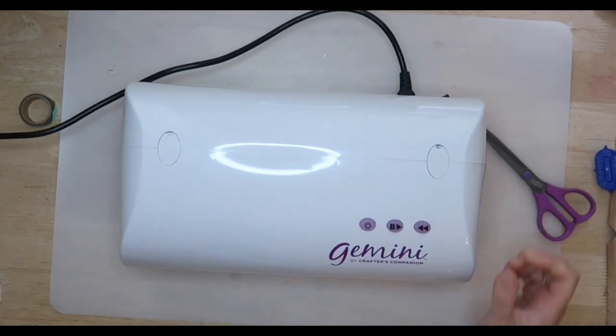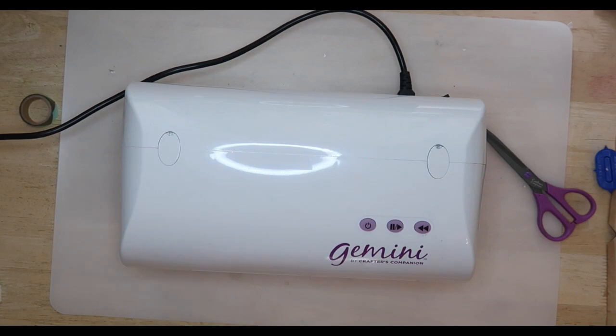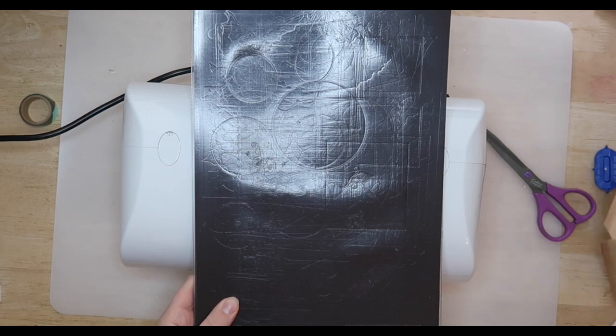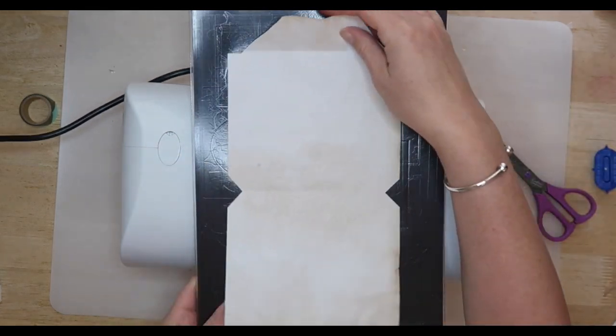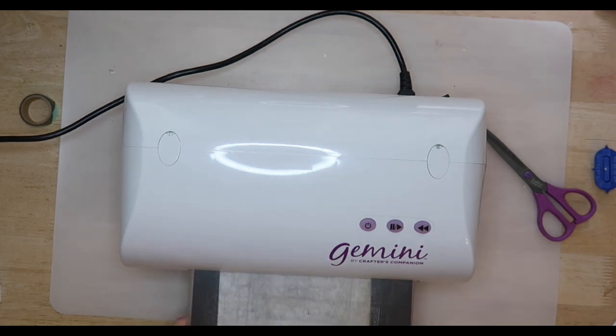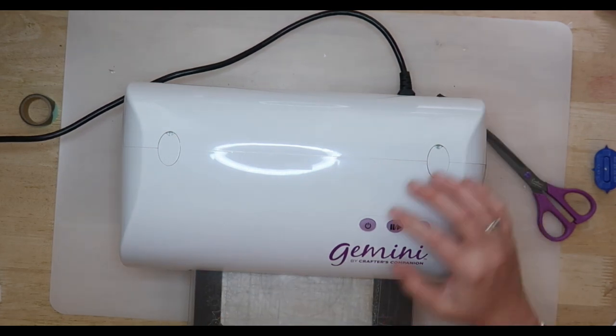To stop the die from slipping out of place I stuck it down onto the paper with some washi tape. I used my Gemini die cutting machine which is motorized so it requires very little effort and it also takes projects that are up to A4 size.